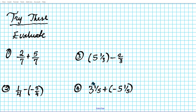Alright, let's hope you had the chance to try the problems. The answers are as follows: question one, seven over seven, which reduces to one. Question two, three over two. Question three, fourteen over three. Question four reduces to negative two.